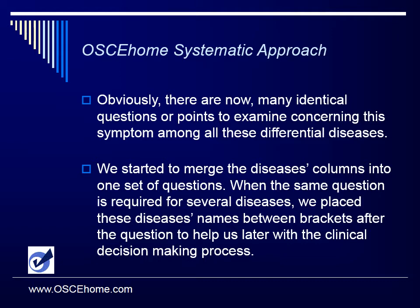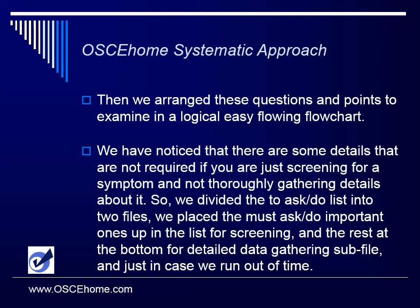We started to merge the disease columns into one set of questions. When the same question or action to perform is required for several diseases, we place those disease names between brackets after the question to help us later with the clinical decision-making process. Then we arranged these questions and points to examine in a logical, easy-flowing flowchart. We noticed that some details are not required if you are just screening for a symptom, so we divided the to-do/ask list into two files — the must-ask important ones up top for screening, and the rest at the bottom for detailed data-gathering, in case we run out of time during the interview.